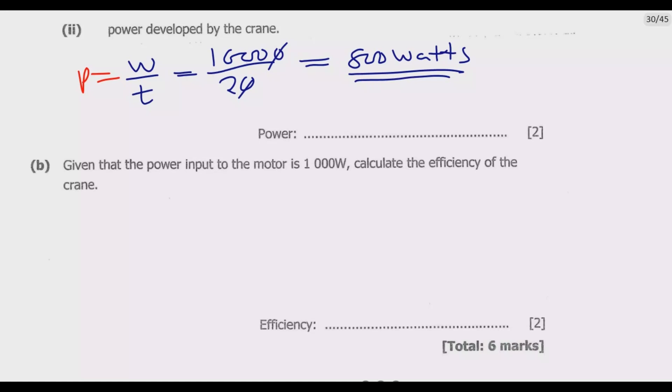Part B: Given that the power input to the motor is 1000 watts, calculate the efficiency of the crane. We are looking for efficiency.